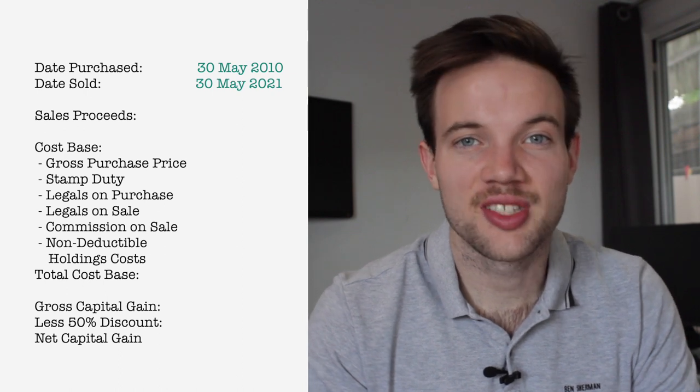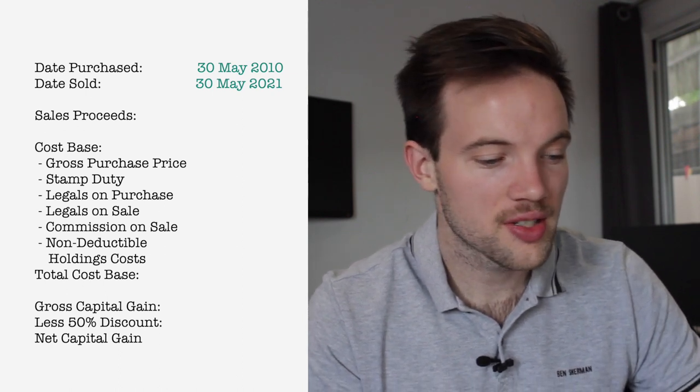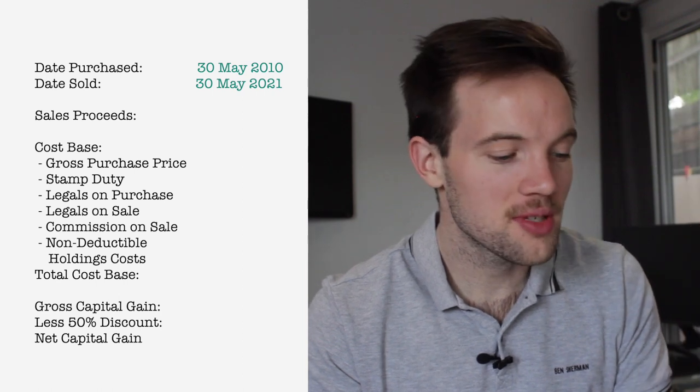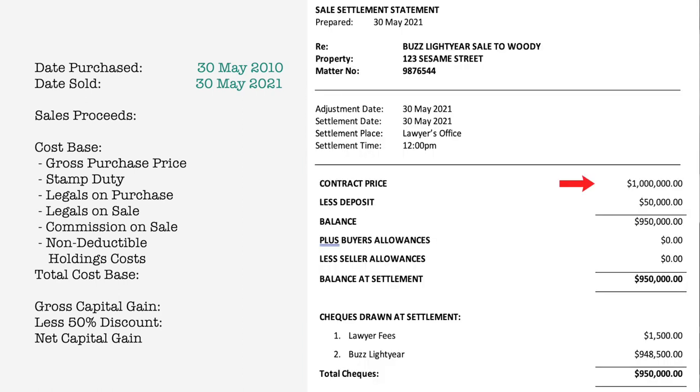Next on the calculator is the monies received for the sale. The sales price can be found on the sale settlement statement — it's the gross contract price. In our example that's $1,000,000. You may also need to consider if any of the sales price relates to property plant and equipment installed during ownership, such as a dishwasher, fridge, or oven. Talk to your accountant about this, as there may be implications in your contract, but in this example we're keeping it simple.